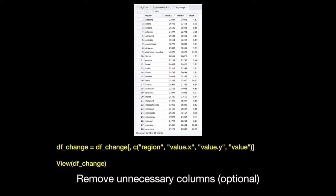If you want to remove all the unnecessary columns, you can optionally type the code you see here. DF change equals DF change, and then the bracket notation does subsetting. Putting nothing before the comma selects all rows, and then the columns we want are region, value.x, which is the per capita income from 2010,